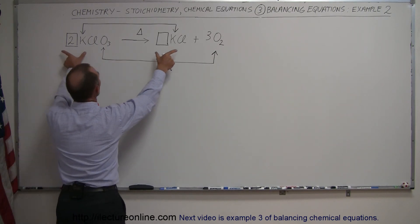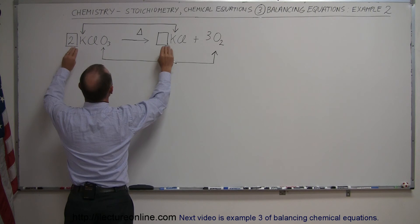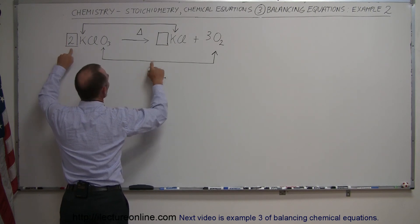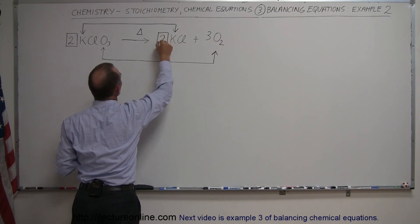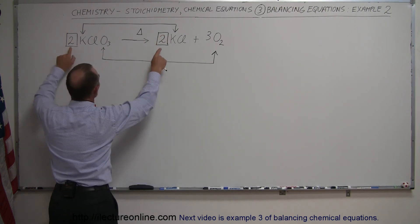But now these two will no longer be balanced. Remember what we said, that whatever number I have here, I must also have here. Otherwise potassium and chlorine will not be balanced. Which means I need to place a number two over there so that those are balanced.